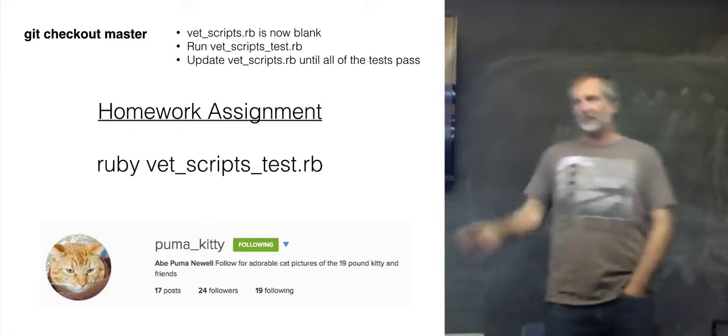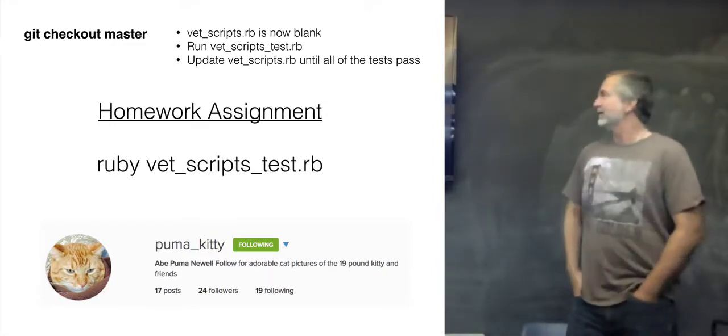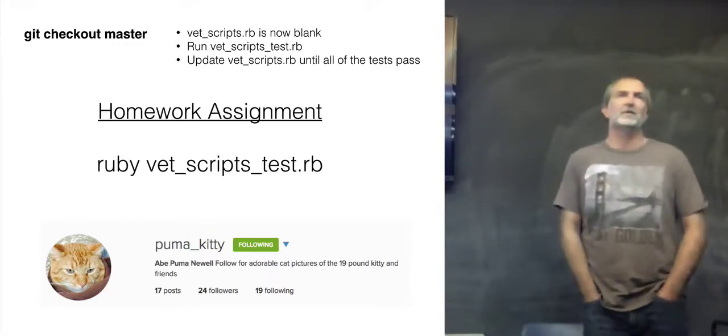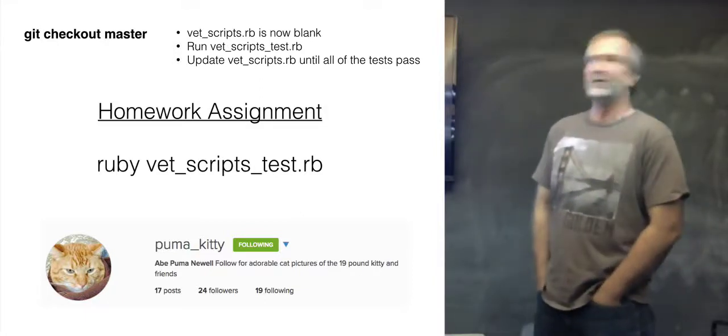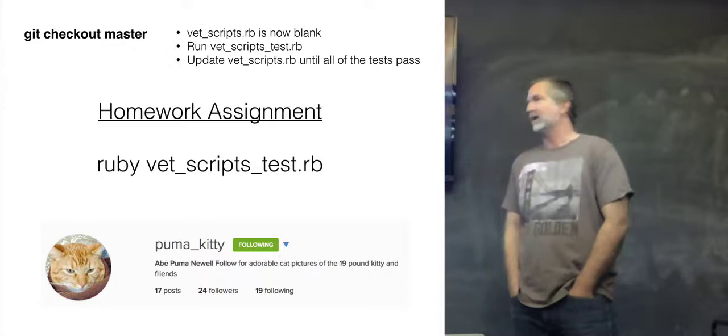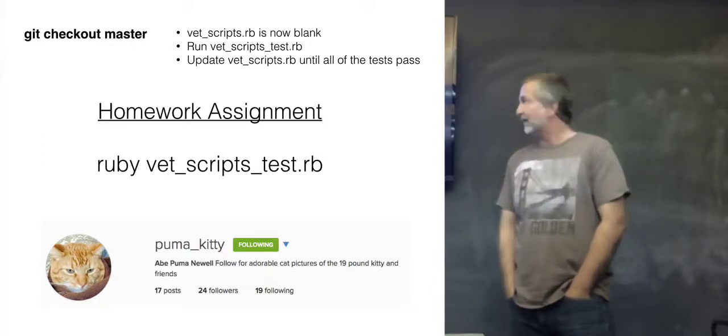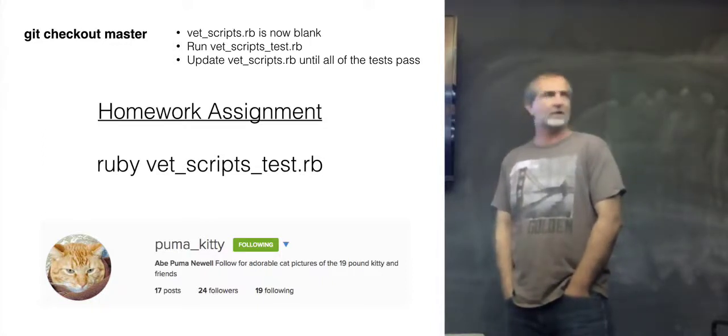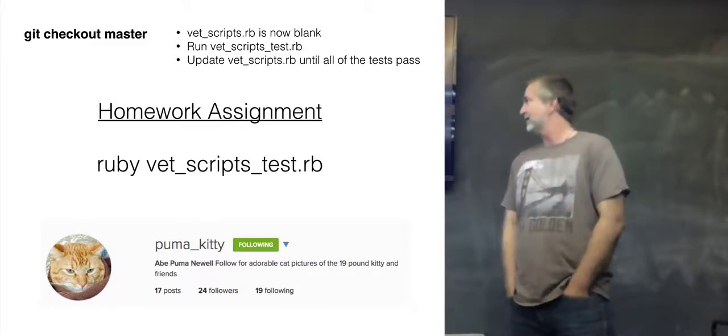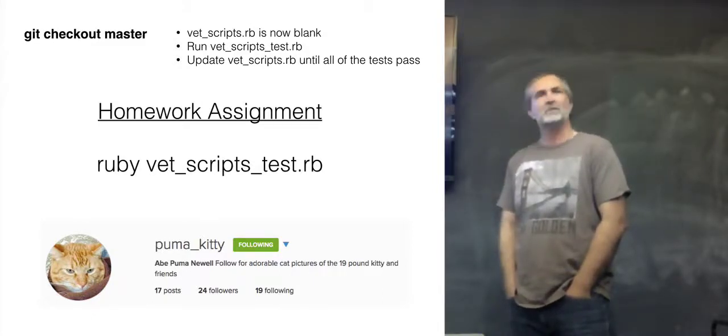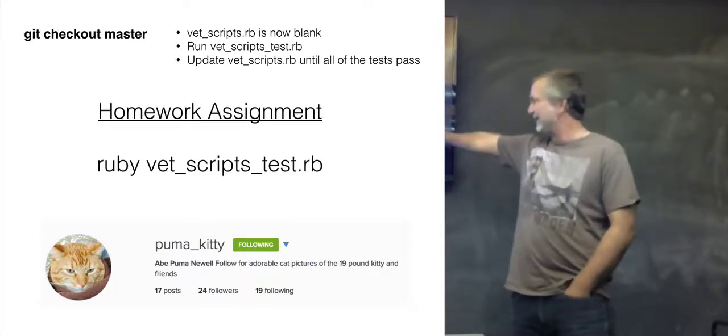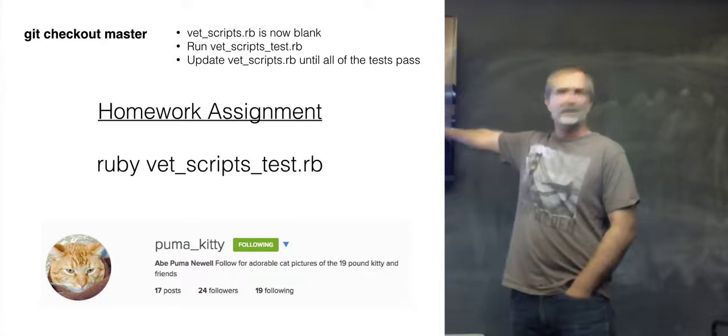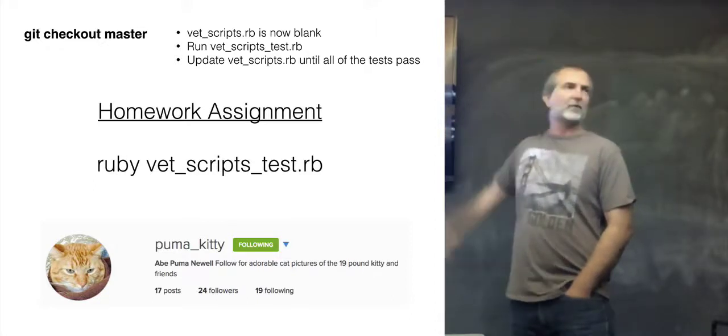There is a homework assignment. If this was at your right level of development, if you were to go to git checkout master, that vet_scripts file will be blank and there's a new file in there called test. You run the test and start writing code, get all the tests to pass, and when you're done you will know how to parse Excel with Ruby. And then if you're into that kind of thing, this is my cat. It's got 17 followers on Instagram.